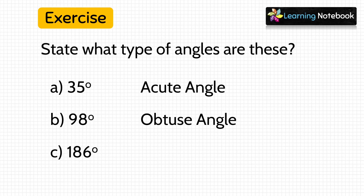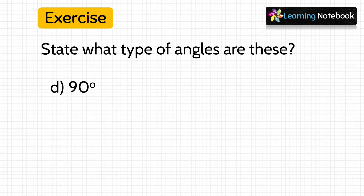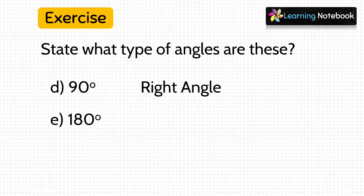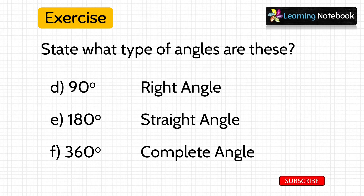Next is 186 degrees — it is more than 180 degrees but less than 360 degrees, so this means it is a reflex angle. Next is 90 degrees, so this means it is a right angle. Then we have 180 degrees, which means it is a straight angle. And lastly, we have 360 degrees, which is a complete angle.